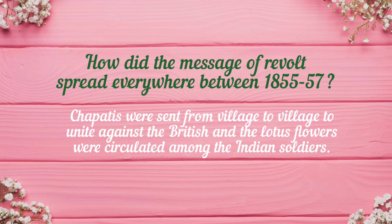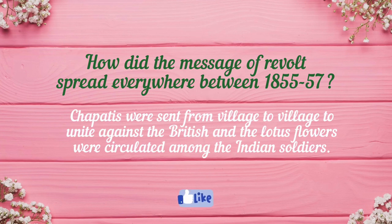How did the message of revolt spread everywhere? Between 1855 and 1857, the British had oppressed Indians to the peak level. It was time to unite against the British, and this message was spread by sending chapatis from village to village. Moreover, lotus flowers were also circulated among the Indian soldiers.